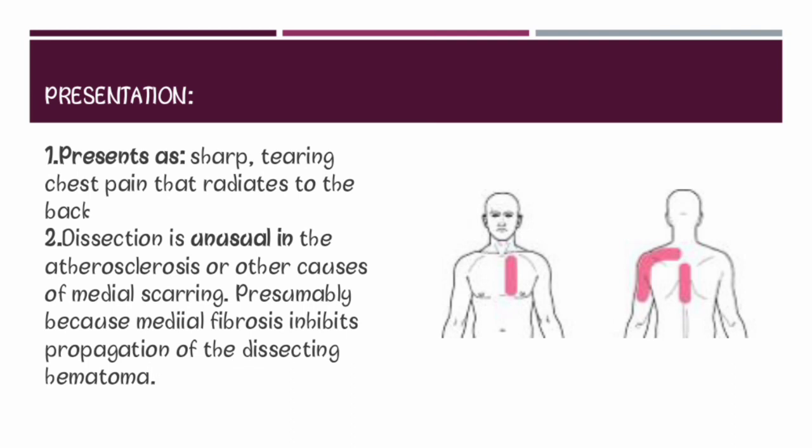Because of medial fibrosis, it inhibits the propagation of the dissecting hematoma. That is why aortic dissection is not typically seen in atherosclerosis or in medial scarring.